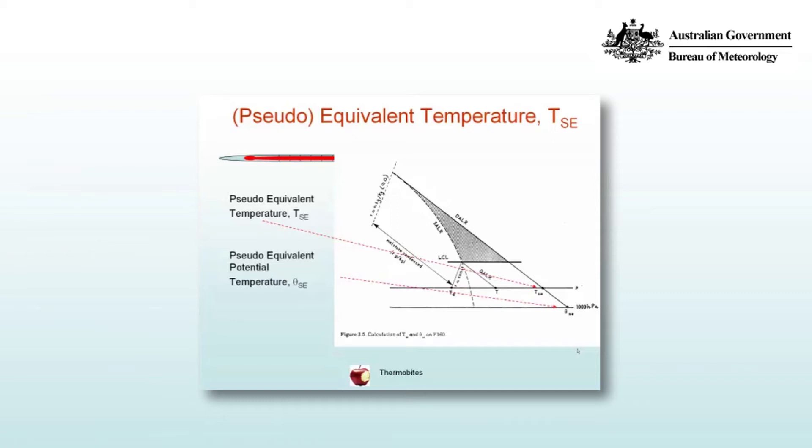Now lower the parcel along the dry adiabatic lapse rate to the original pressure level and you'll obtain the pseudo-equivalent temperature, TSE.